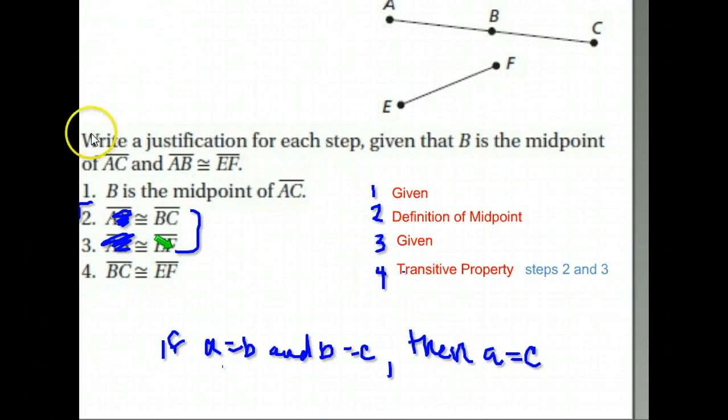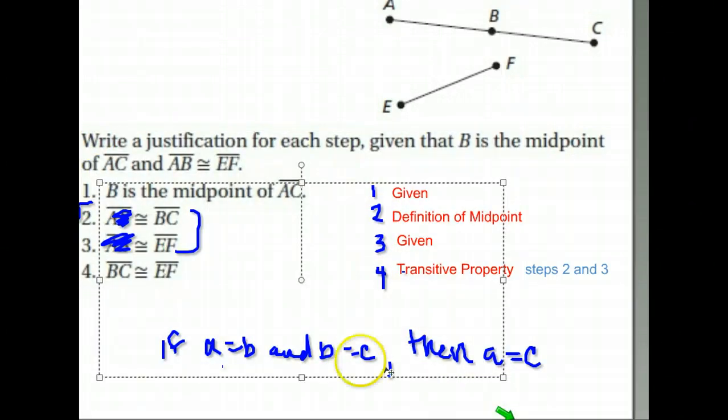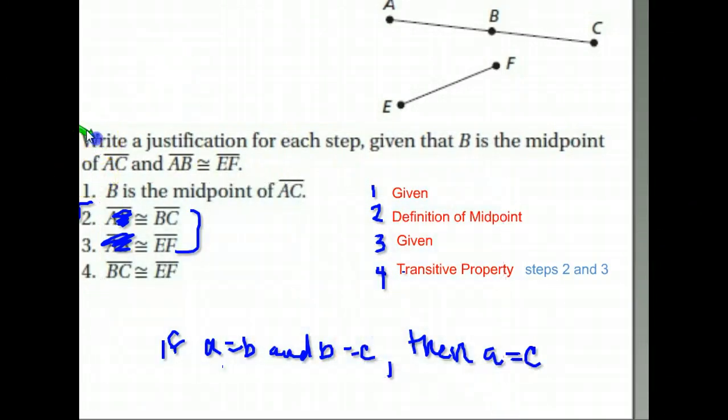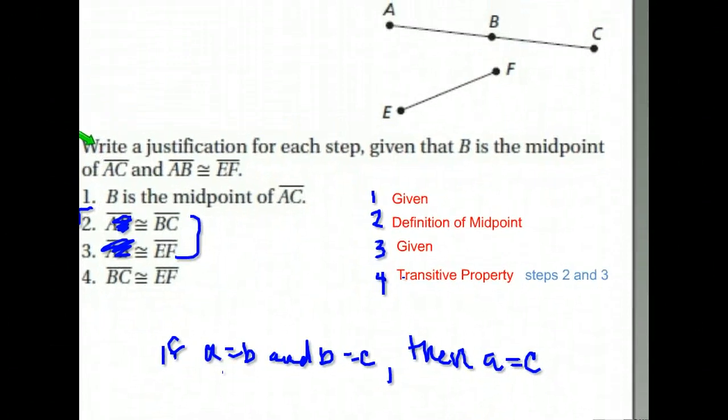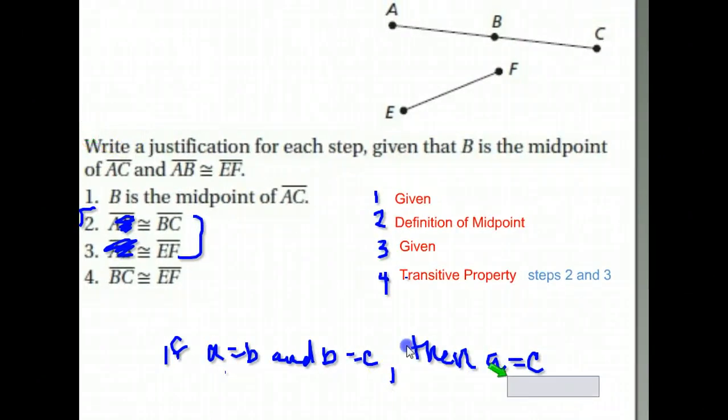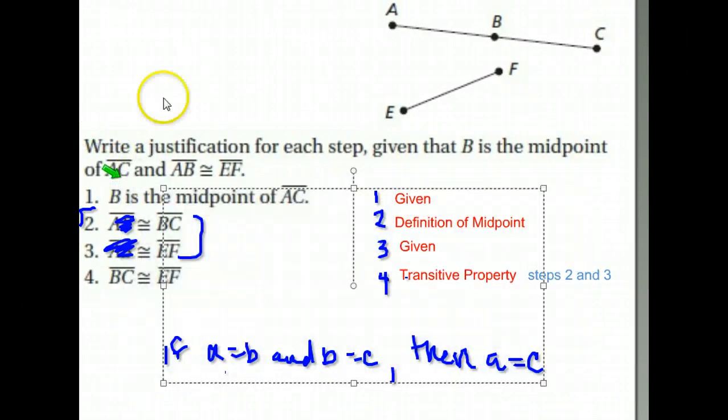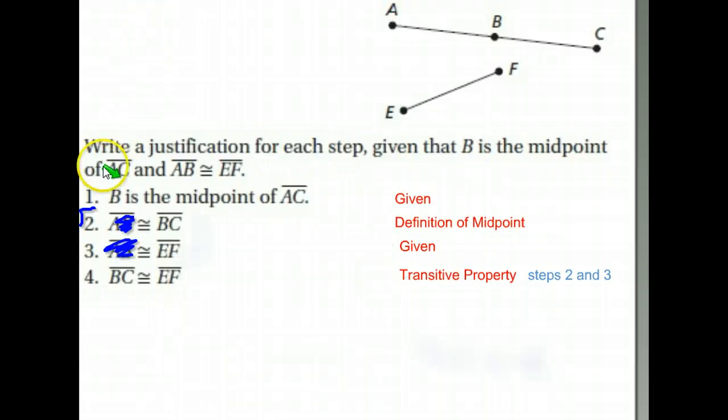This is what our proof would look like minus all of my random scribblings, which I will go ahead and take out. So this is a cleaned up version of this proof. Given that B is the midpoint of AC and that AB is congruent to EF, we're able to prove that BC is also congruent to EF.